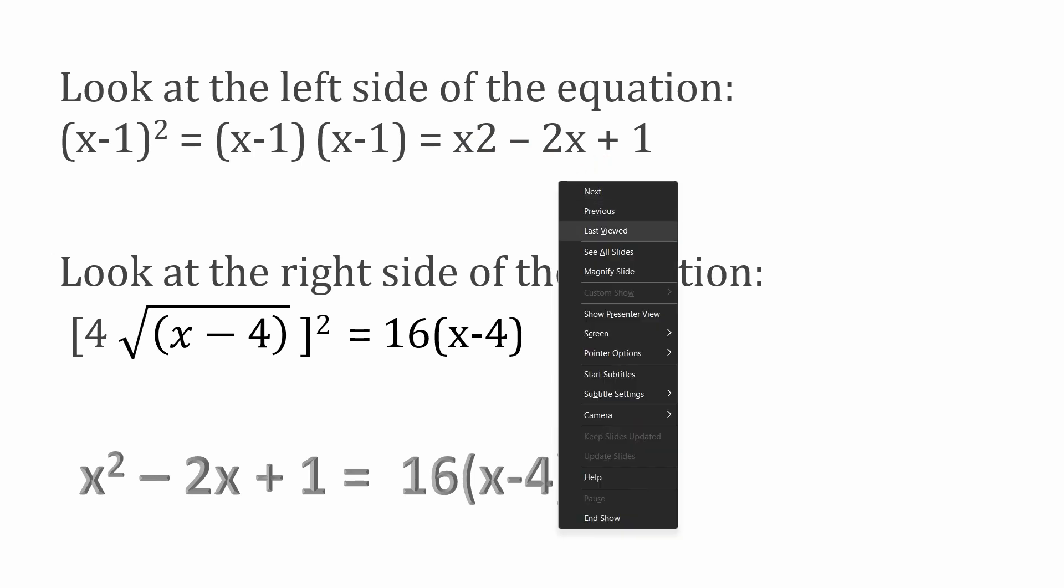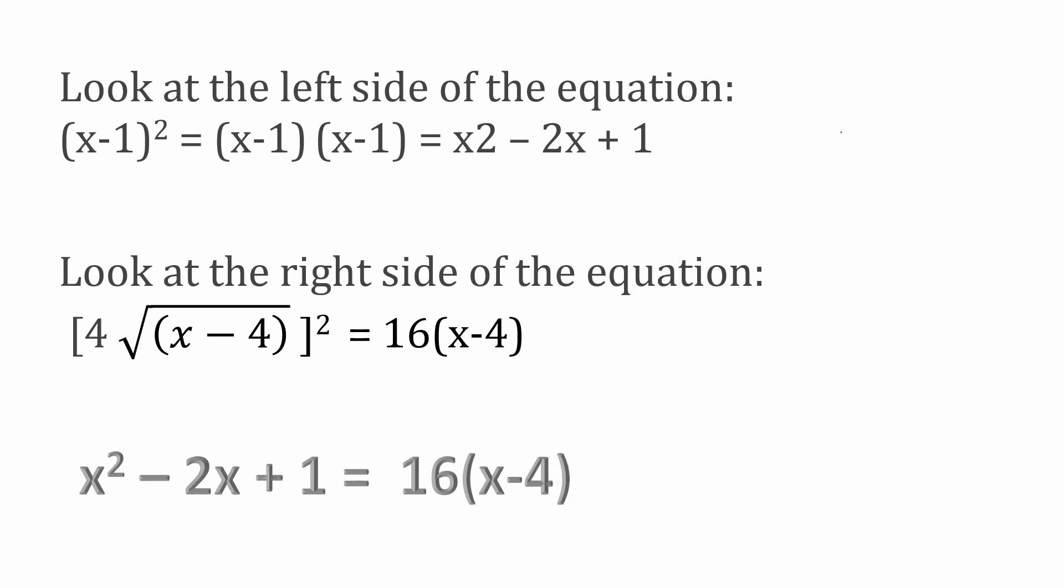That's actually not x2. That should be a square. So an exponent x squared minus 2x plus 1. I should have written that really here as x squared. That's what this should be right here. Apologize for that. Just caught that mistake.